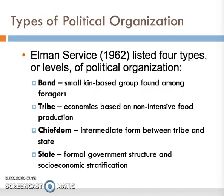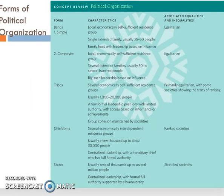Bands are small-scale kin-based groups found among foragers. Tribes are larger than bands and usually have economies based on non-intensive food production. Bands and tribes tend to be relatively egalitarian. Chiefdoms are larger and somewhat centralized. A chief is a formal leader who becomes a key political figure with higher rank that allows him to favor his kin and supporters with material and social benefits. States are large, highly centralized, hierarchical political systems with formal government structure and socioeconomic stratification. This table summarizes these four forms of political organization, noting differences in population, leadership, centralization, and hierarchy between bands, tribes, chiefdoms, and states. You might pause for a moment to review it.